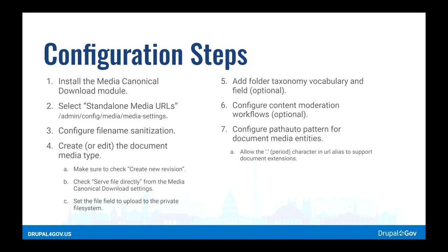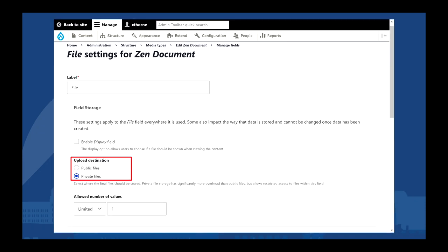A couple of optional things: you can set up that folder taxonomy vocabulary with whatever hierarchy or folders you want. You can configure your content moderation workflows if you need drafts, accessibility reviews, or archive options. And then configure the Pathauto pattern for those media entities so it uses your folder structure and the media name as part of that URL. If you'd like to see a demo, I'd be happy to demo it for anybody interested — just come find me and I can show you exactly how this works for both the administrator and the end user.